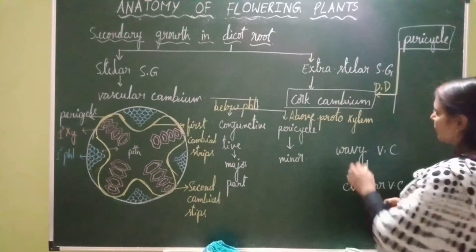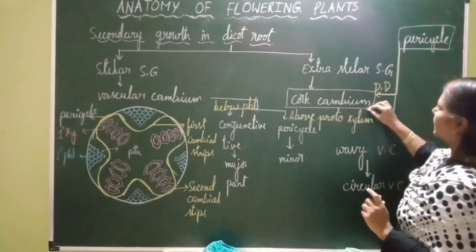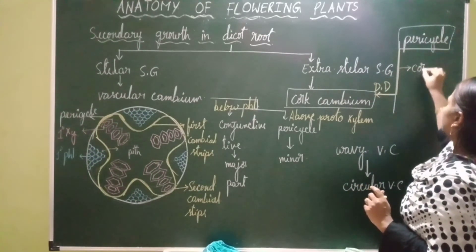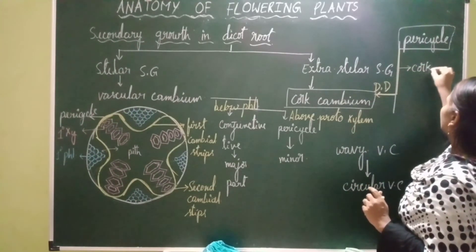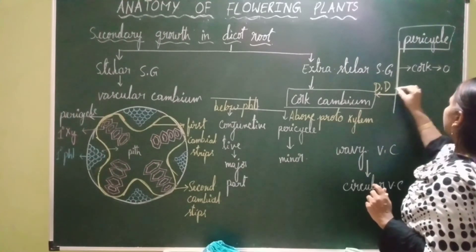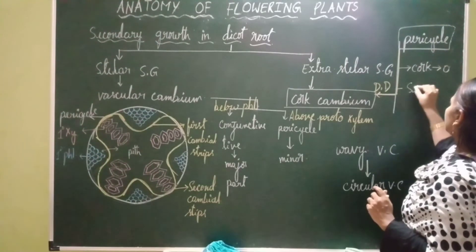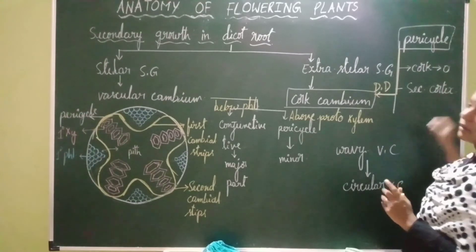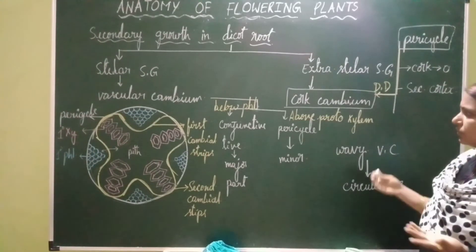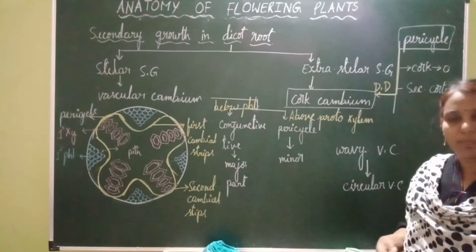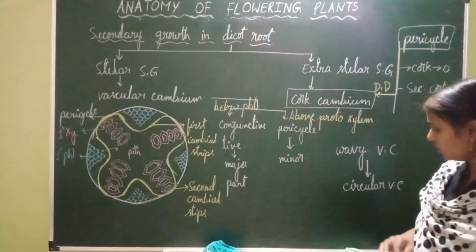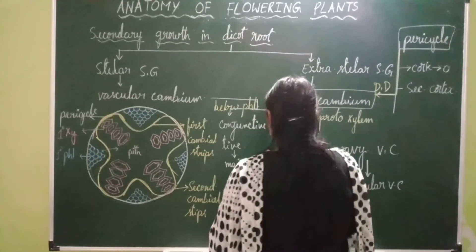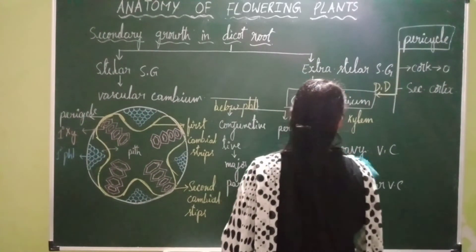After formation of cork cambium, it cuts off cork cells towards the outer side and secondary cortex towards the inner side — the rest of its functions are the same as in dicot stem. This is all about secondary growth in dicot root.